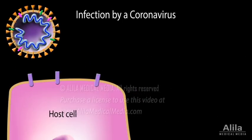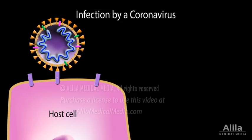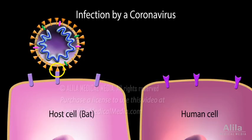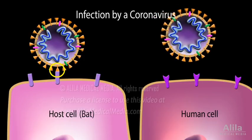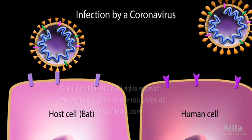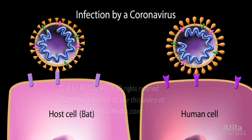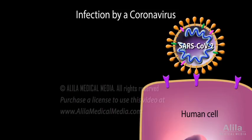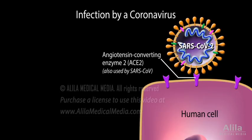In order to infect a host cell, the spikes of the virus must bind to a molecule on the cell surface called a receptor. The specificity of this binding explains why viruses are usually species-specific — they have receptors in certain species and not others. Host jumping is usually triggered by mutations in spike proteins, which change them so that they can now bind to a receptor in a new species. The novel coronavirus appears to use the same receptor as the SARS coronavirus for entry to human cells, and that receptor is the angiotensin-converting enzyme 2, ACE2.